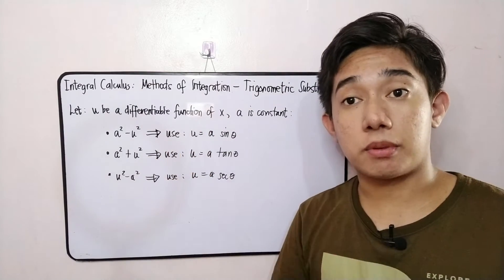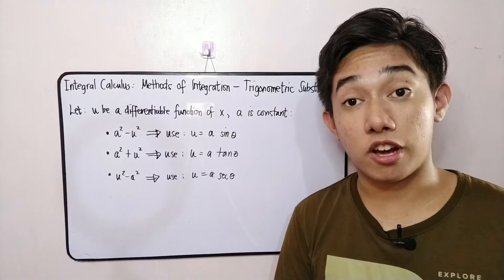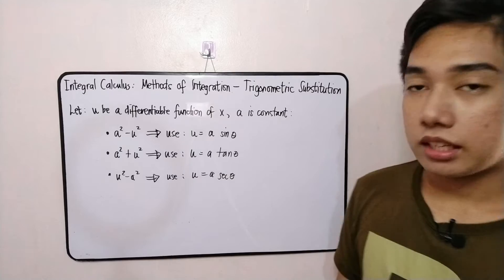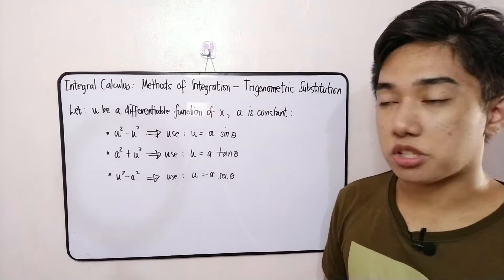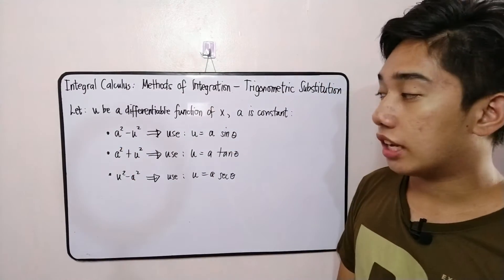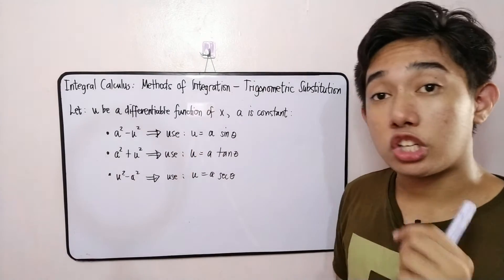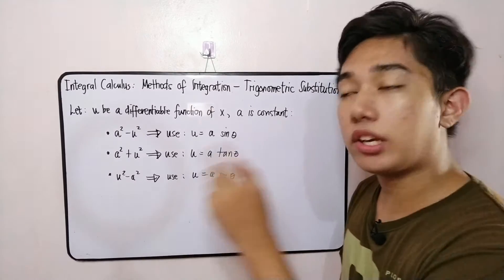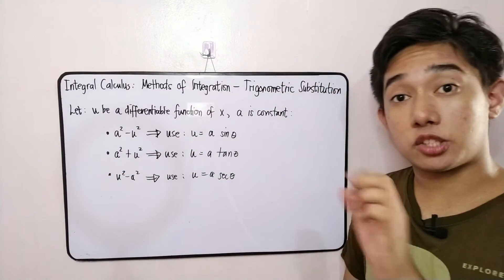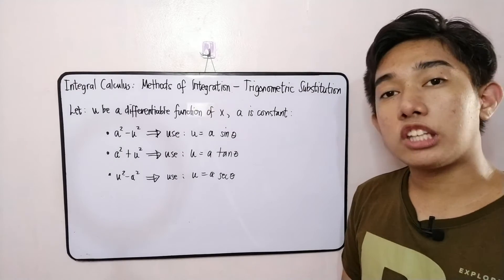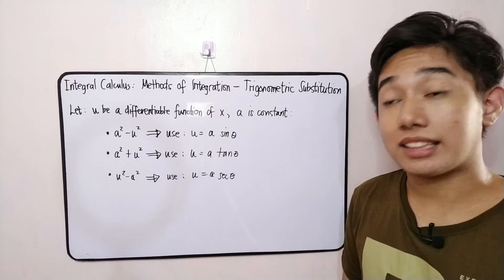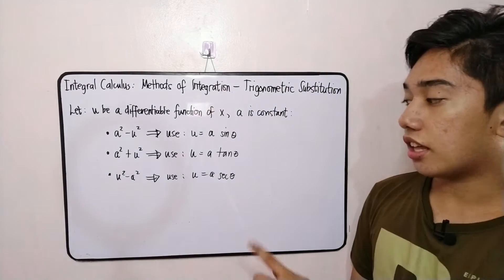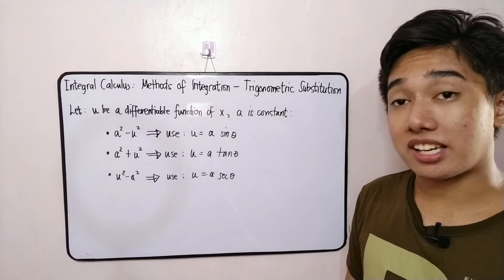Before we discuss this topic, let's assume that u is the differentiable function of x, and a is our constant for this technique. When your integrand contains a squared minus u squared, you will use the substitution u equals a sine theta. If you encounter a squared plus u squared, use u equals a tangent theta. And if you encounter u squared minus a squared, use u equals a secant theta.